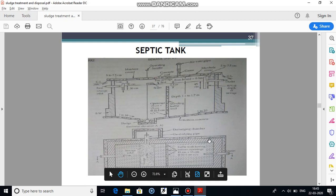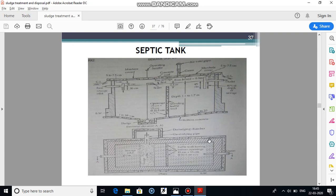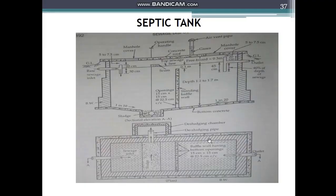Going to the construction details: the tank is designed to prevent direct currents between the inlet and the outlet, ensuring effective sedimentation. This is achieved by using T-shaped pipes, so there is no direct entry of sewage into the septic tank. T-shaped pipes are provided with submerged ends at both inlet and outlet.